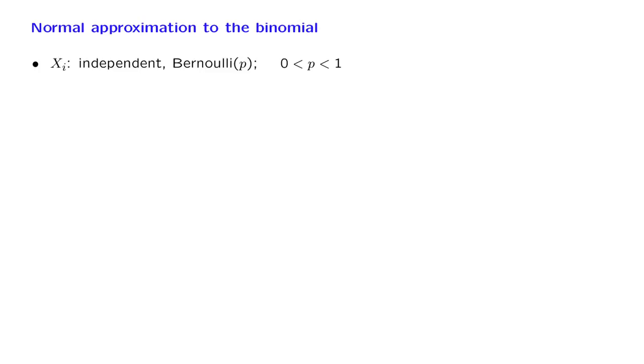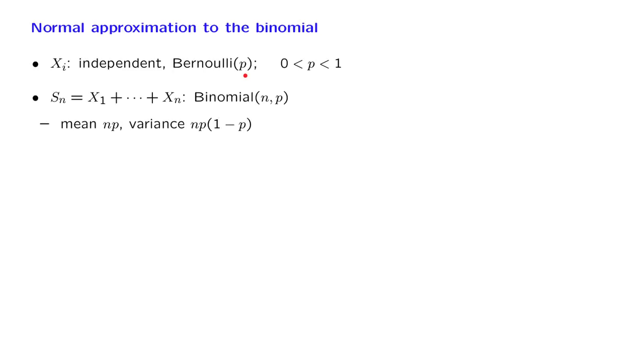An important application of the central limit theorem is in the approximate calculation of binomial probabilities. We start with random variables Xi that are independent and have the same distribution — they are all Bernoulli with parameter p. We add n of those random variables, and the resulting random variable Sn has a binomial PMF with parameters n and p.